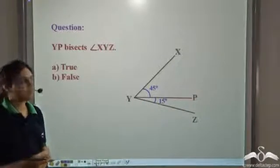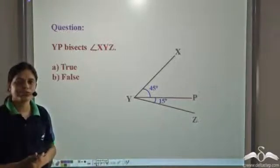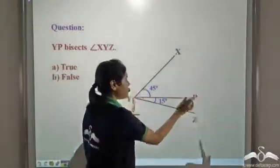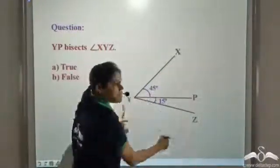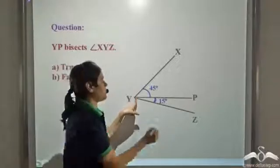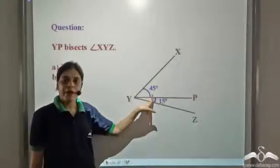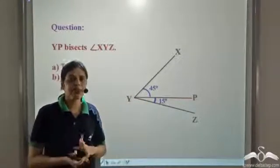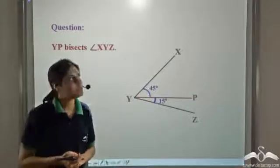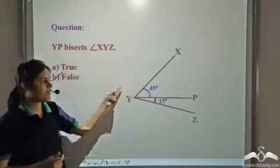Now answer this question: YP bisects angle XYZ — true or false? YP is a line segment. The angle on one side is 15 degrees and the angle on the other side is 45 degrees; these are not equal. Since an angle bisector must form two equal angles, YP cannot be the angle bisector of angle XYZ. So this statement is false.